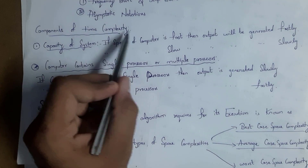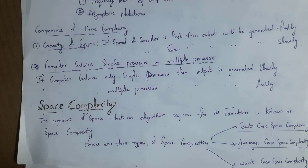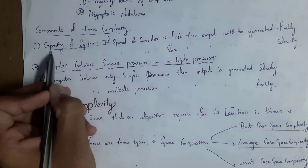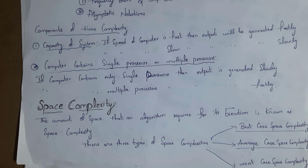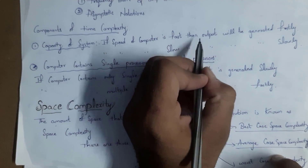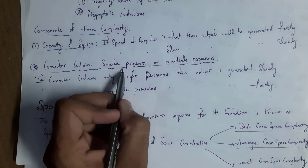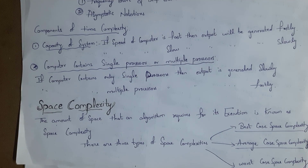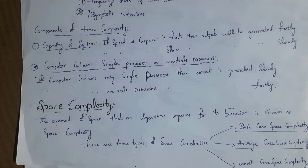There are two components of time complexity. The first is capacity of the system, which depends on various factors such as RAM, processor, and type of OS. If the speed of the computer is fast, output is generated quickly; if slow, output is generated slowly. The second component is whether the computer contains a single processor or multiple processors. A single processor generates output slowly, whereas multiple processors generate output faster.